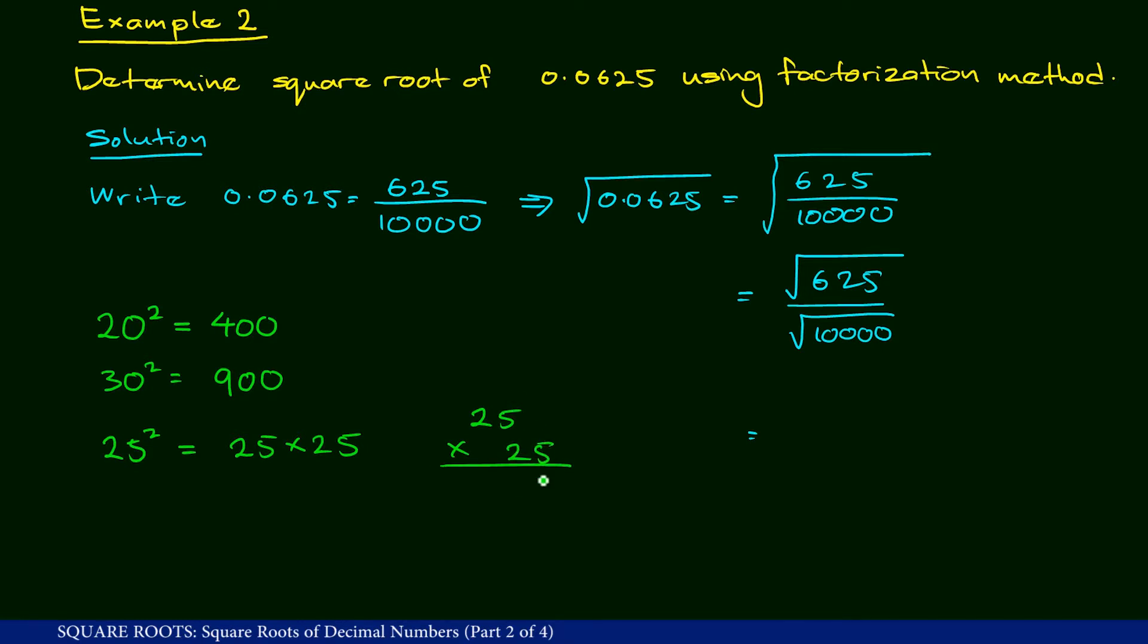So 5 times 5 is 25, carry 2. 2 times 5 is 10 plus 2, that is 12.